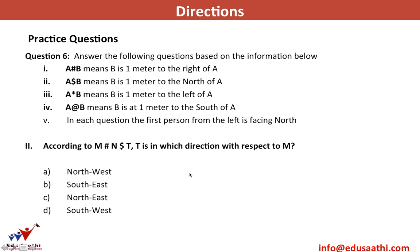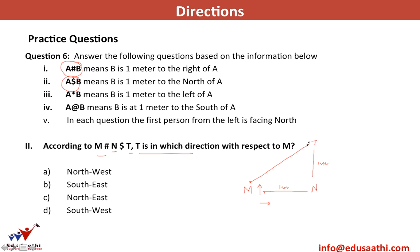For M#N$T: N is 1 meter to the right (East) of M, and T is 1 meter to the North of N. So T is Northeast of M.